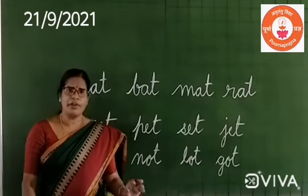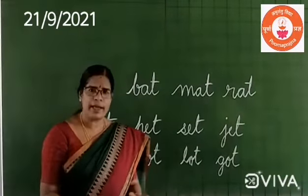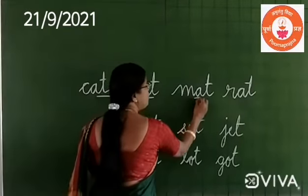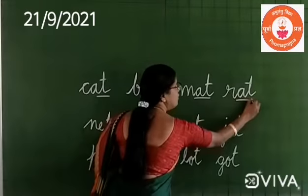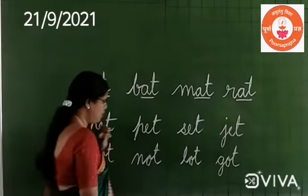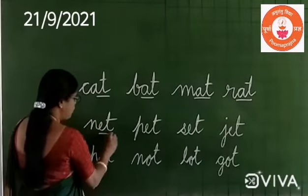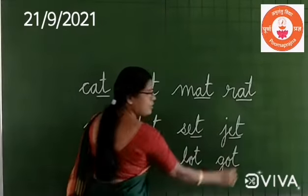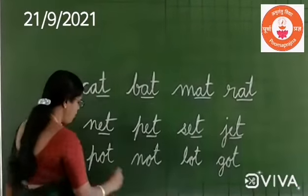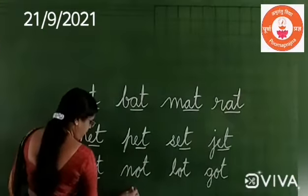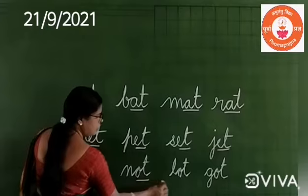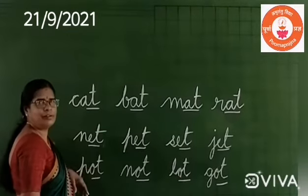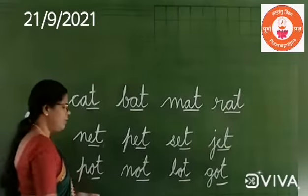The rhyming words are verse which has same ending sounds. See? 'Et', 'et', 'et', 'et'. 'Ot', 'ot', 'ot', 'ot'. Is it good?